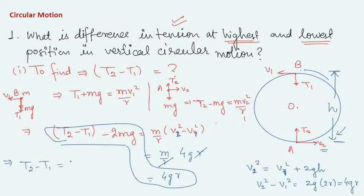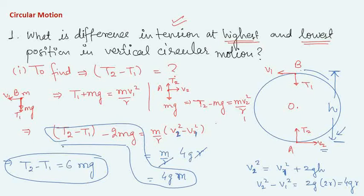Therefore, t2 minus t1 equals 6mg. The difference in tension between the lowest and highest position in vertical circular motion is six times the mass times acceleration due to gravity.